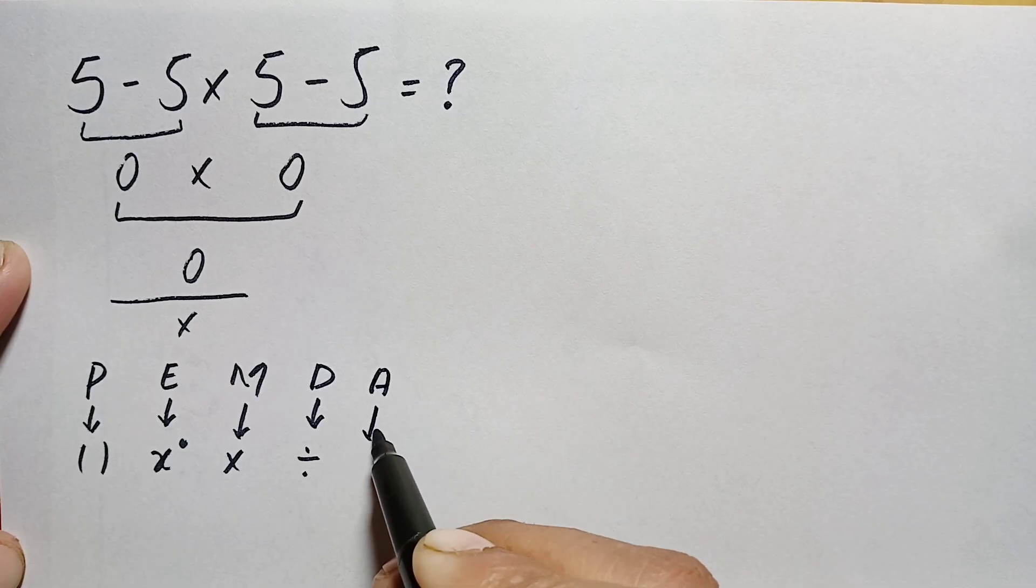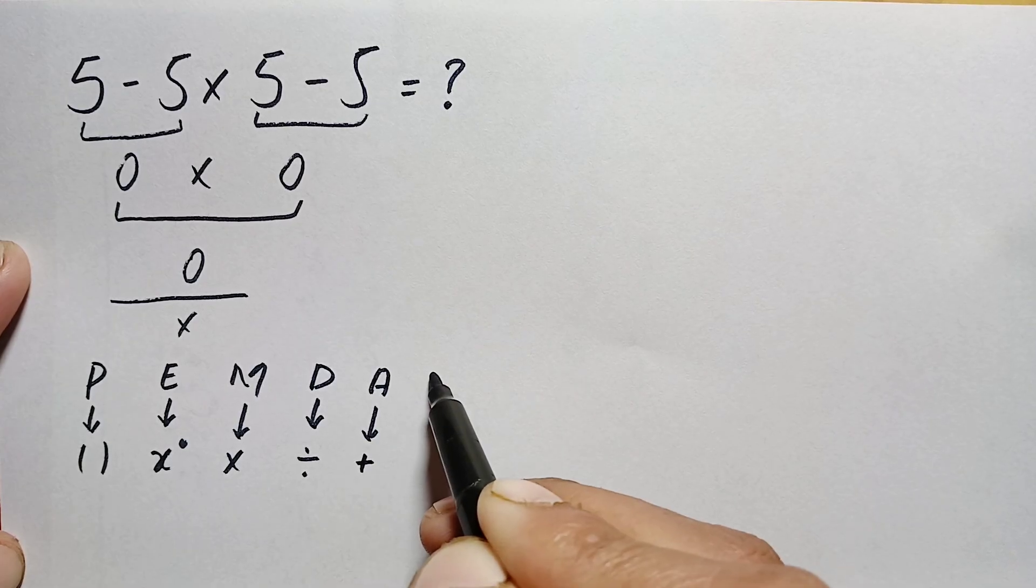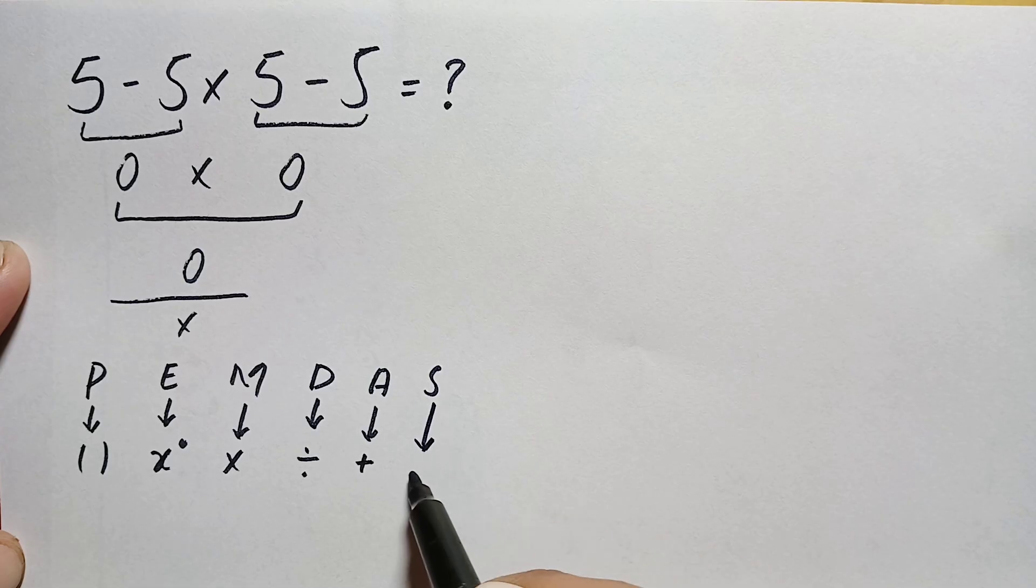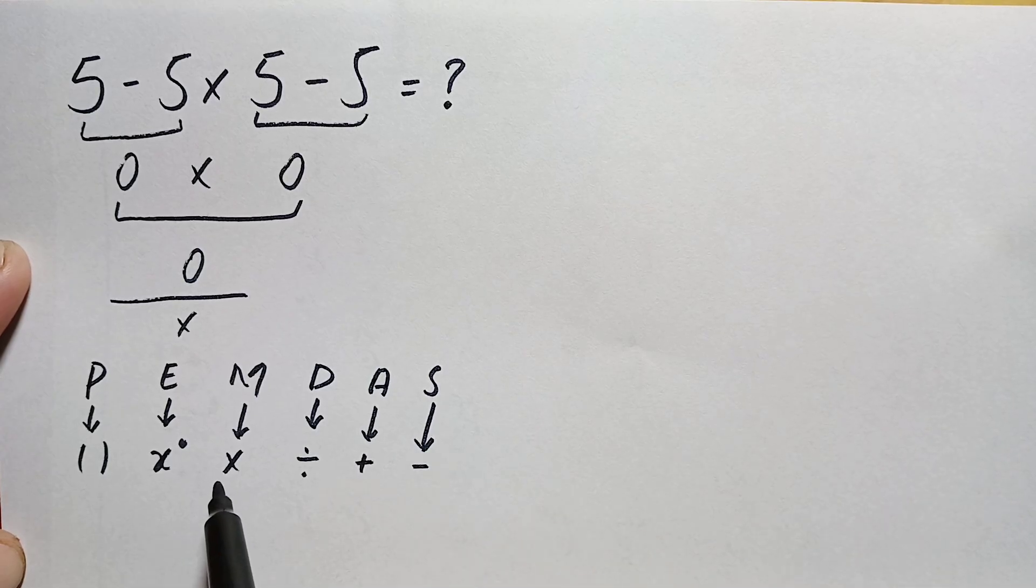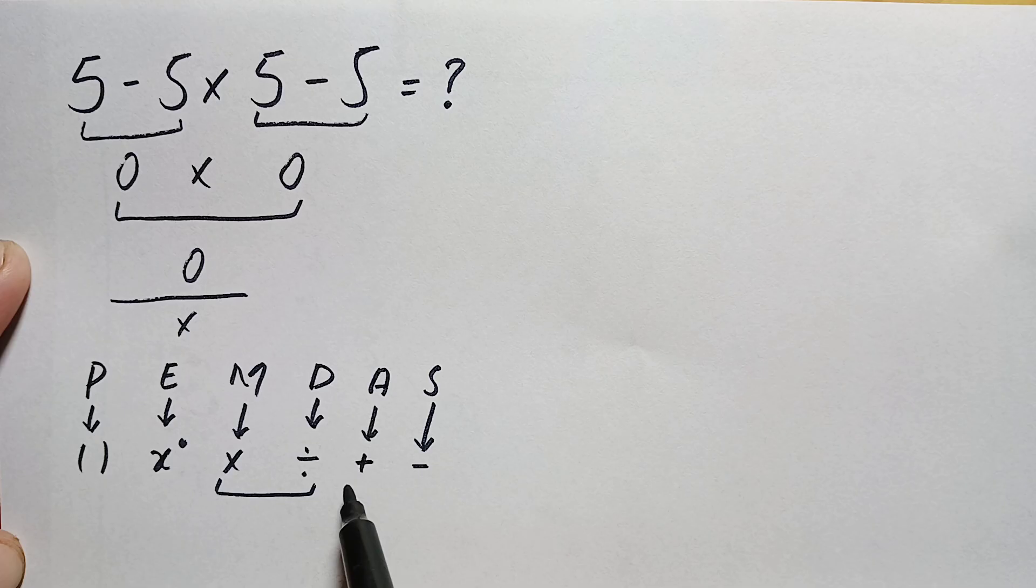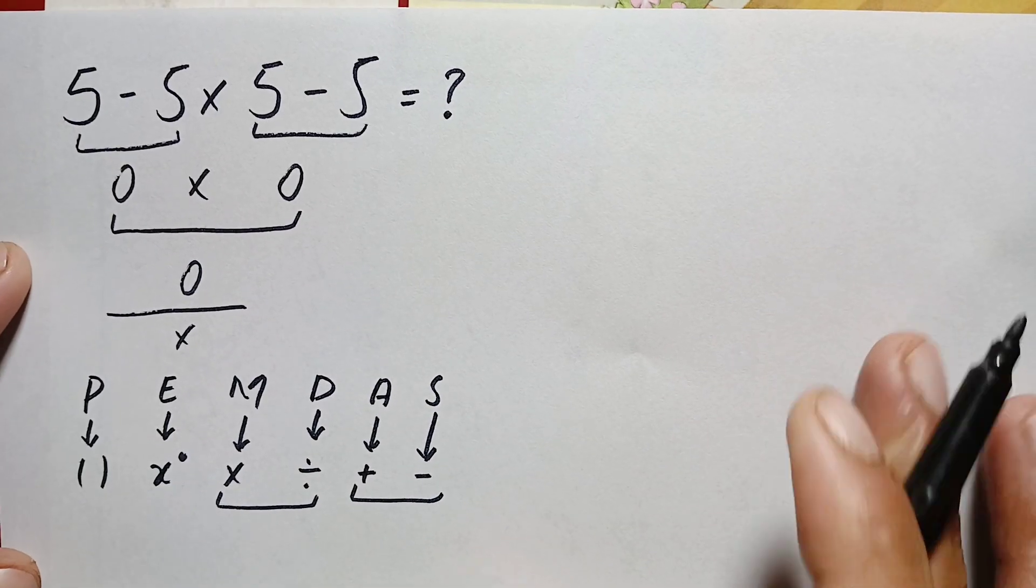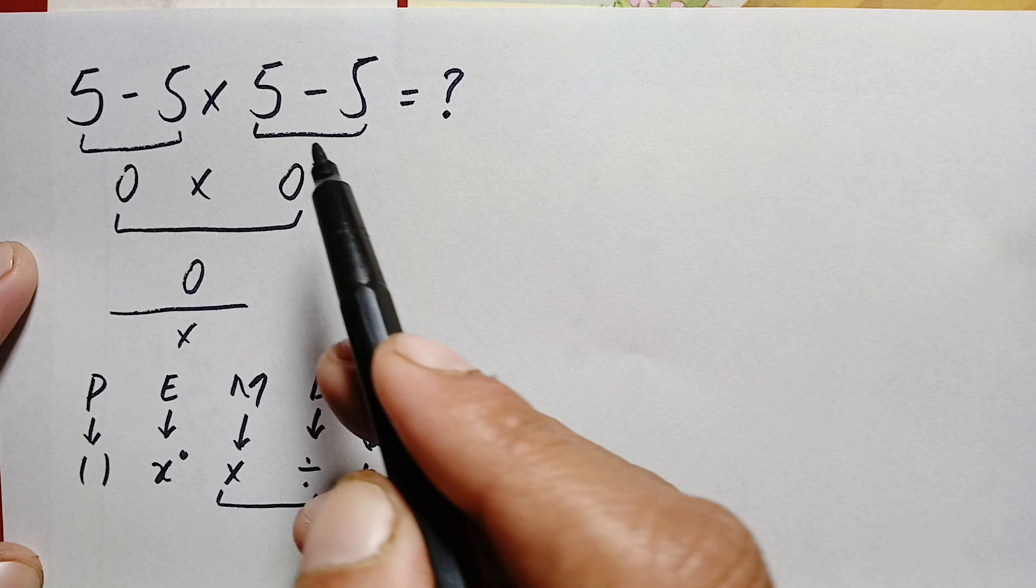A means addition and S means subtraction. We can do division and multiplication from left to right, as well as addition and subtraction from left to right. So we will apply these rules in this problem and solve it correctly.